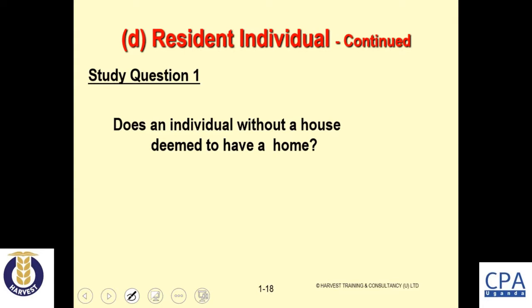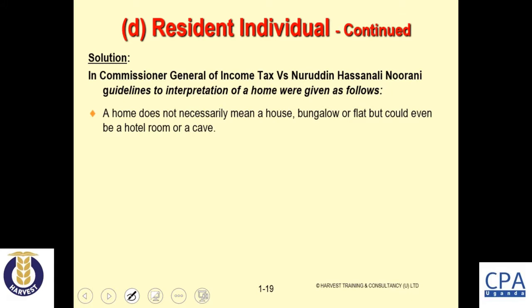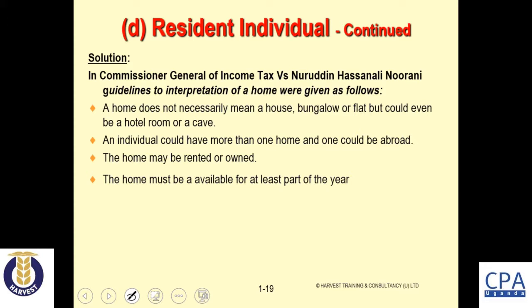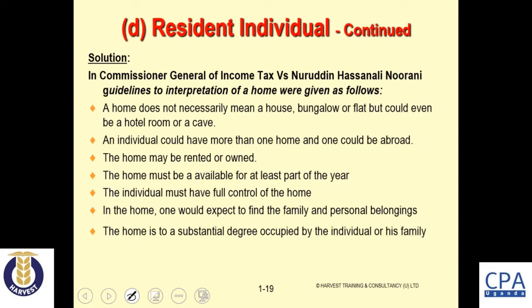A study question asks: can an individual without a house be deemed to have a home? In Commissioner General of Income Tax v. Narundini Hassanali, guidelines for interpretation of 'home' are given: (1) a home does not necessarily mean a house, bungalow, or flat — it could be a hotel room or even a cave; (2) an individual may have more than one home, including one abroad; (3) the home may be rented or owned; (4) the home must be available for at least part of the year, with the individual having full control, and where one would expect to find the family and personal belongings.